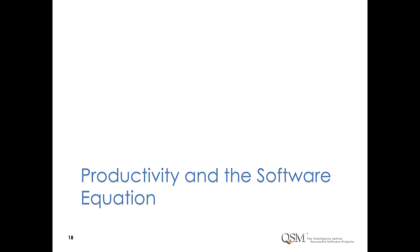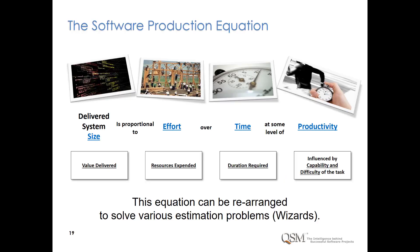The software production equation is at the heart of SLIM tools, based on Larry Putnam Sr.'s original work. The size of the system — the value delivered — is proportional to some amount of effort applied over some amount of time at some level of productivity. For straightforward estimates, inputs are size and productivity, and outputs are time and effort.